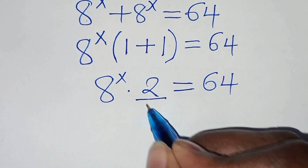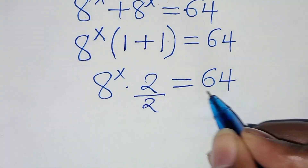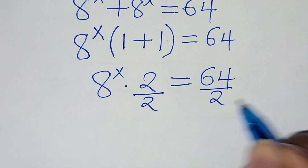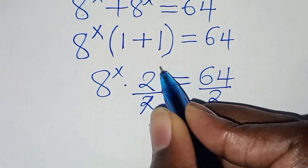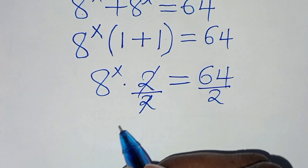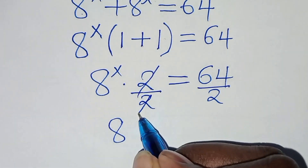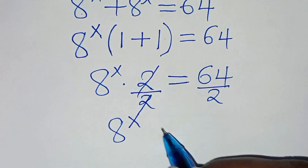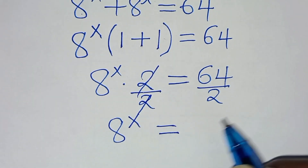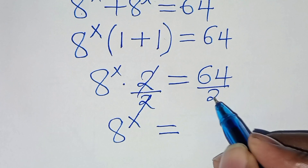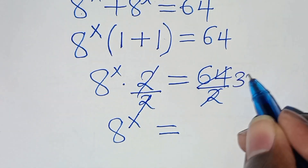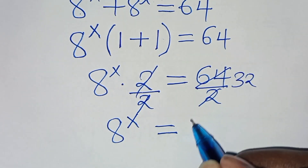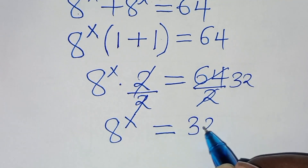So let's divide both sides by 2, so that now 8 to the power of x is equal to 64 divided by 2, and this is equal to 32.